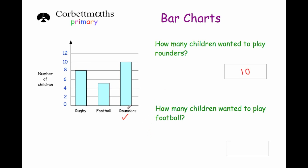Next: how many children wanted to play football? The football bar is in the middle — if we go up and across we get in between 4 and 6. Well, in between 4 and 6 that's going to be 5. So 5 children wanted to play football.